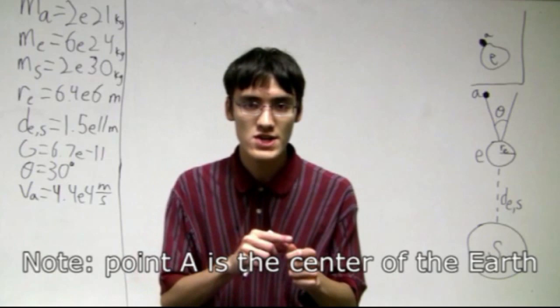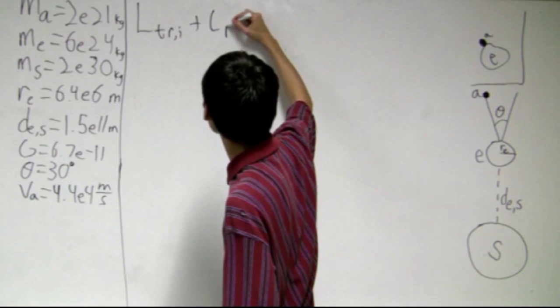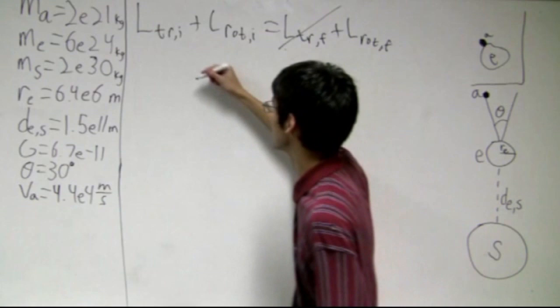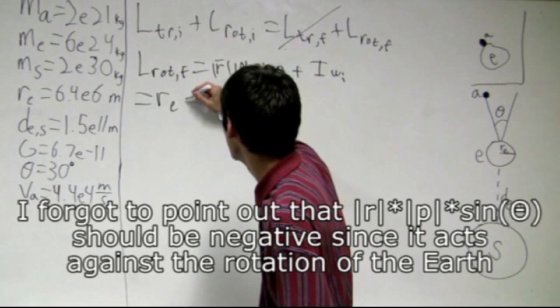Alright, so for part B, if we're only using the Earth and the asteroid for right before the collision to right after the collision, we know that L_trans_i plus L_rotational_i equals L_trans_f plus L_rotational_f. This is zero because after the collision happens, it's all rotational energy. So L_rotational_final equals L_trans_i, which is sine magnitude R, sine magnitude P, sine theta, plus I omega_i.